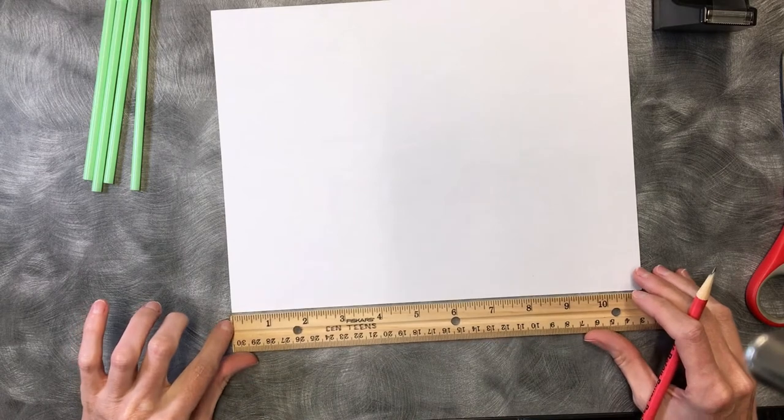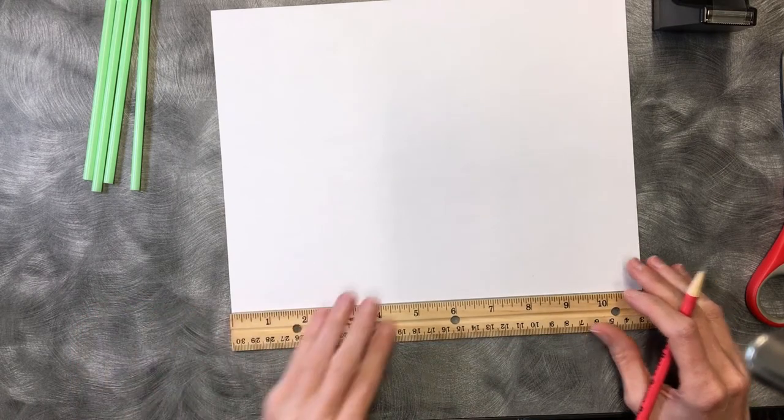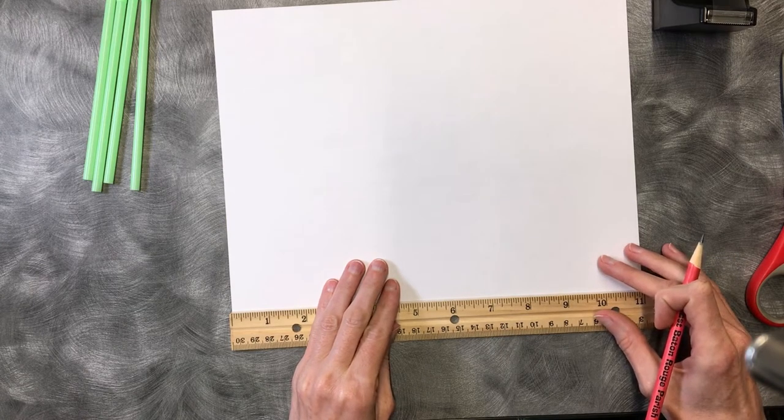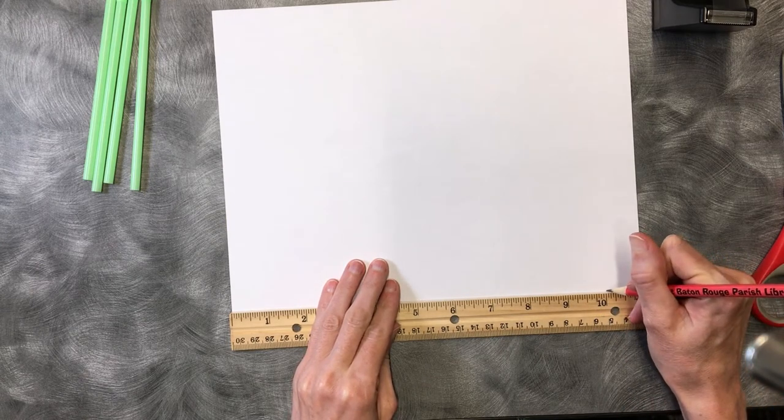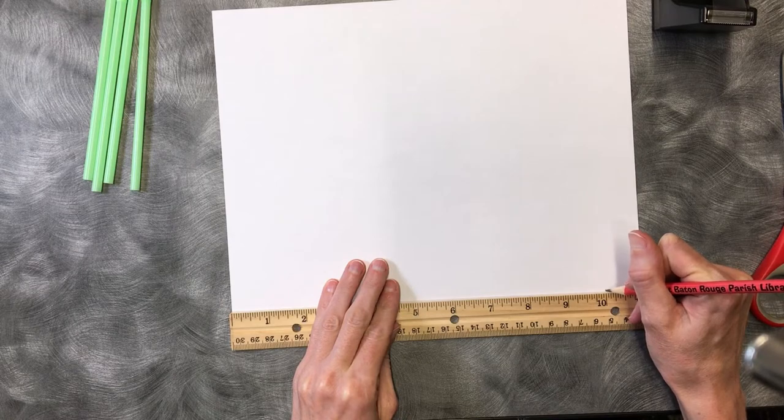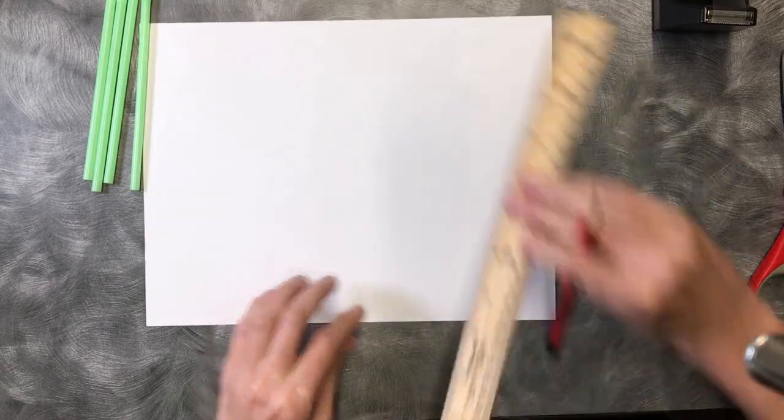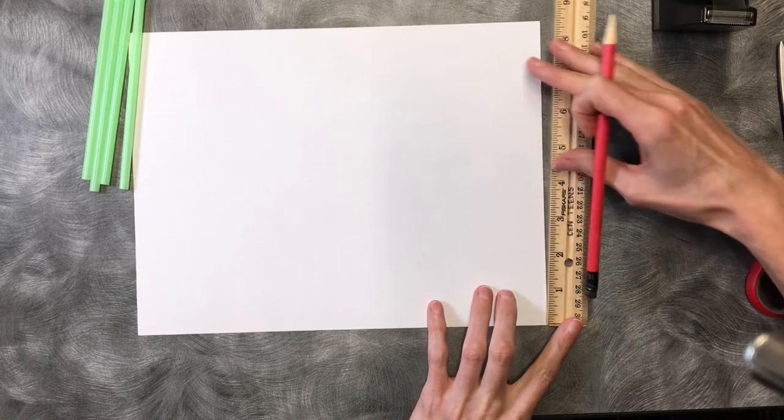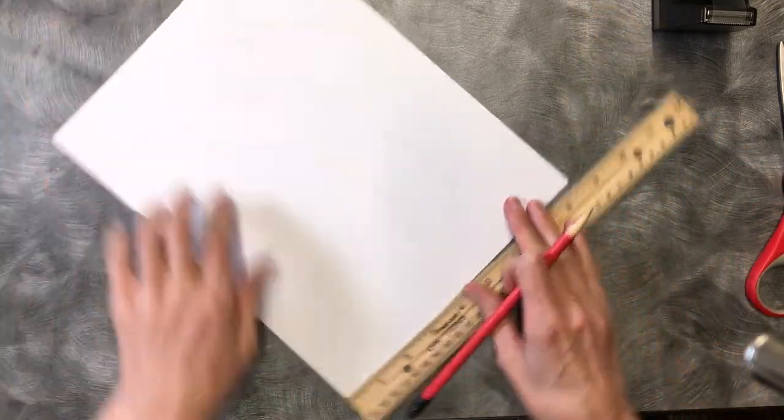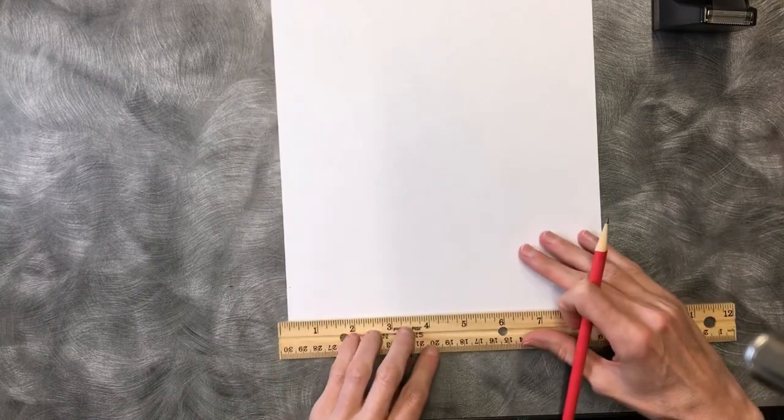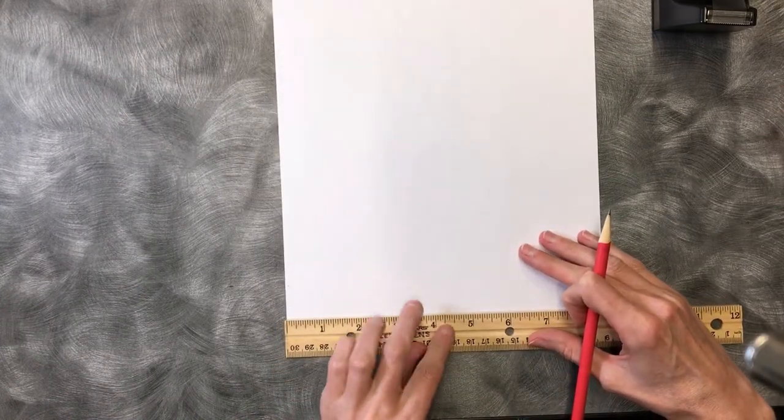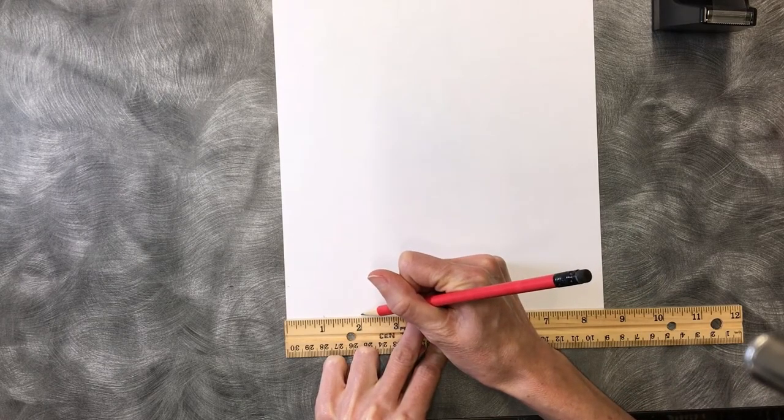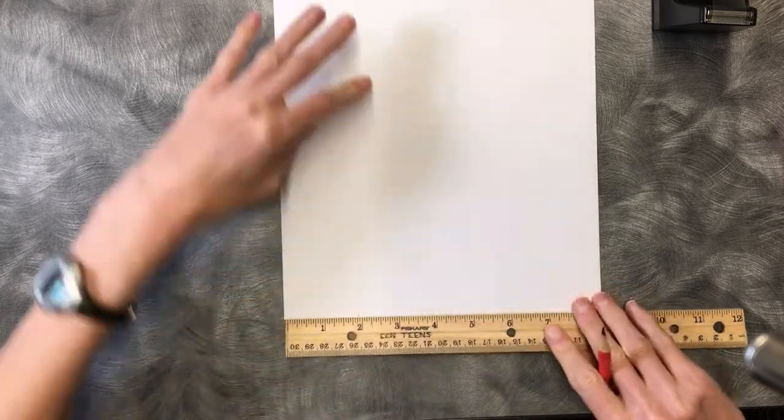Line up that zero mark with the corner of the paper and make a mark at ten inches. I'm going to turn the paper so it'll be easier. I'm going to mark one inch and two inches because we need two strips.